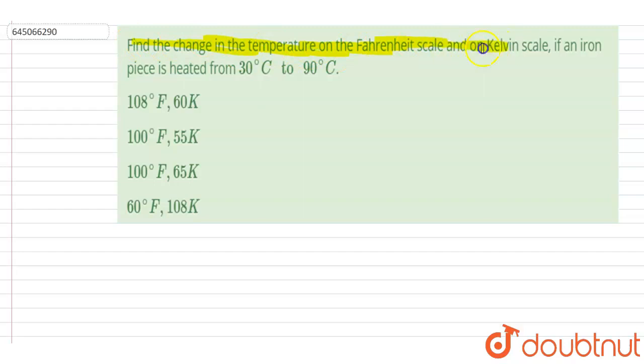Find the change in temperature on Fahrenheit scale and on Kelvin scale if the iron is heated from 30 degree Celsius to 90 degree Celsius. So if I talk about the conversion, like one scale to another scale conversion, so basically in all scales if you measure the temperature, let's say the temperature is T.